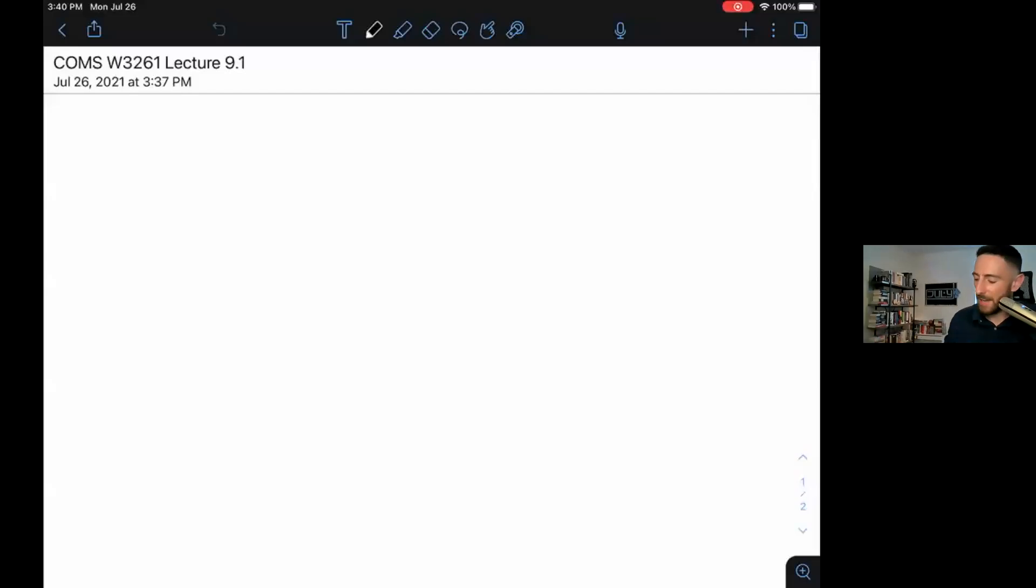Hi, welcome back to computer science theory. This is COMS W3261, lecture nine, part one. Lecture nine being on recognizing, deciding and enumerating, all the things that Turing machines can do.